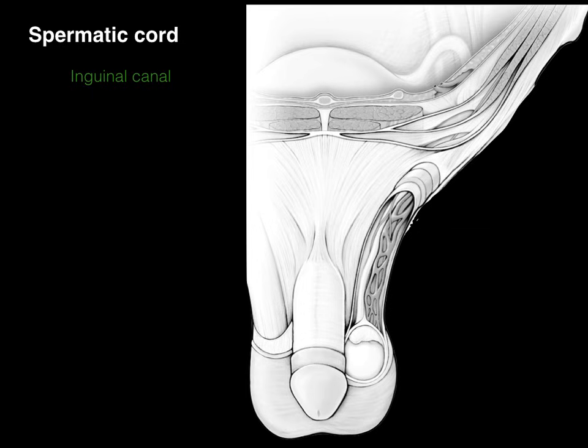Here's an anterior view of the inguinal region. The inguinal canal is the canal that connects the testis with the abdominal wall. In green, there is that inguinal canal. The outside opening is called the superficial inguinal ring, and the one on the inside is called the deep inguinal ring. The inguinal canal connects those two rings, and that's what the testis descended through.